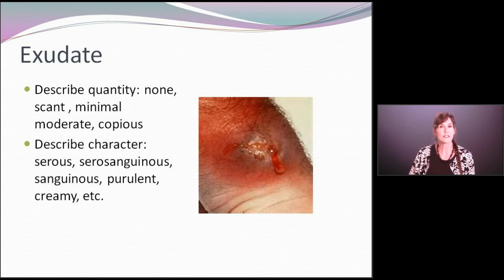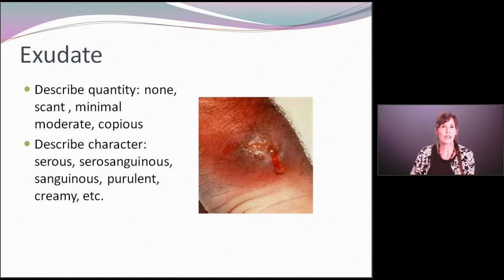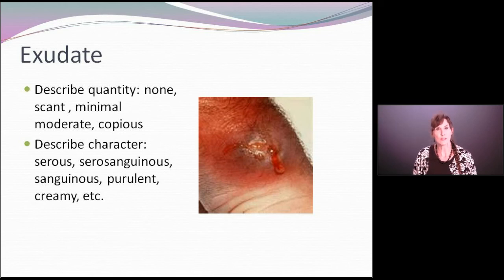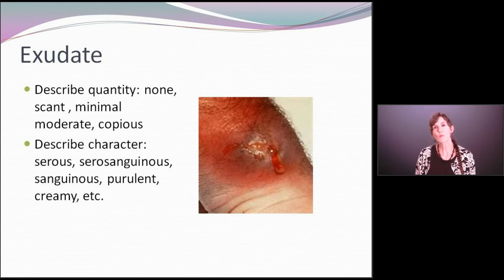You also want to describe the character. Is it serous? Is it serosanguinous, where you have a little bit of blood tinge? Is it frankly bloody or sanguineous? Is it purulent — do you have frank pus coming out of the wound? Or do you have a yellow, creamy-tinged drainage you're not quite sure about? If you're not certain, describe what you're seeing. For example: a minimal amount of serosanguinous exudate, a copious amount of serous exudate, or a scant amount of purulent exudate. Try to describe both the amount and the type.